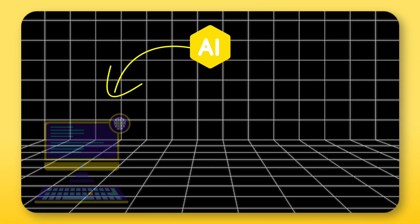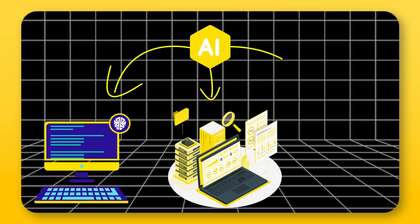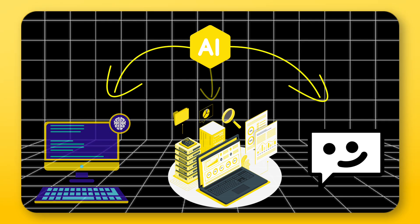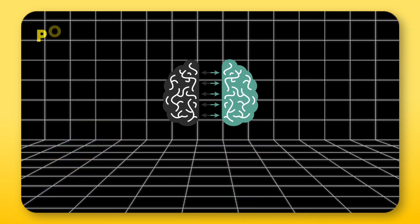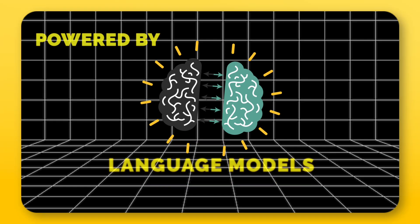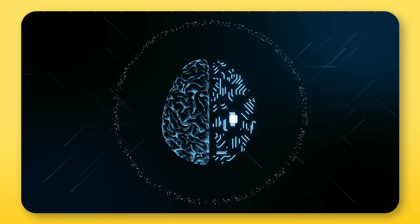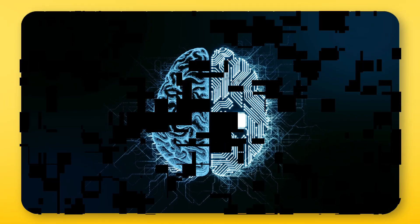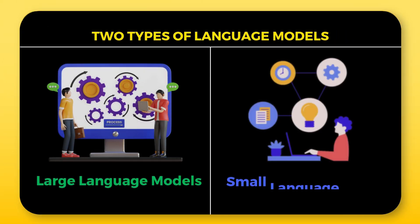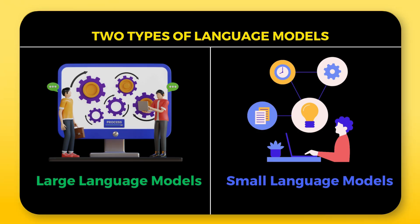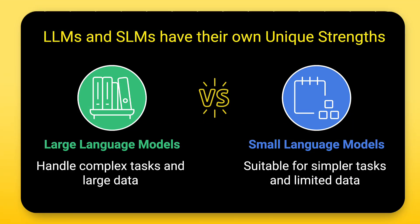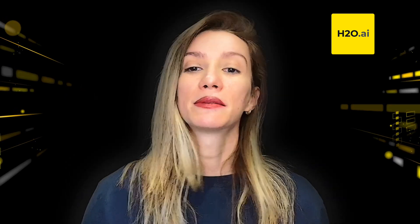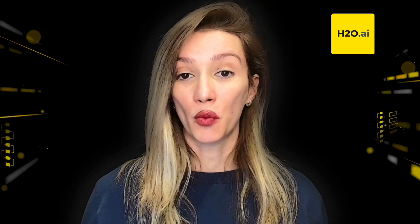You've probably heard of AI models that can write essays, extract information from a big file, or hold long conversations. These are all powered by language models, but not all language models are the same. In fact, they fall into two main categories: large language models (LLMs) and small language models (SLMs). Each has its unique strengths, and understanding how they differ helps make sense of when and where to use them.